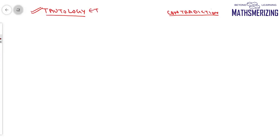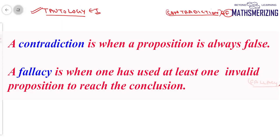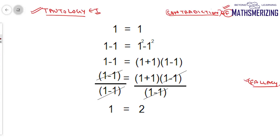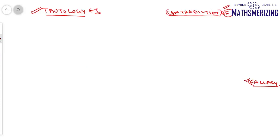Two more important terms in mathematical reasoning are tautology and contradiction. If a mathematical statement is always true, we say it is a tautology. If a mathematical statement is always false, we say it is a contradiction. There is also fallacy — many teachers and textbooks incorrectly use contradiction and fallacy interchangeably. Contradiction means the truth value is false for all inputs, whereas fallacy is when we use incorrect or invalid propositions to reach a conclusion — like proofs where people claim to prove 1 equals 2.